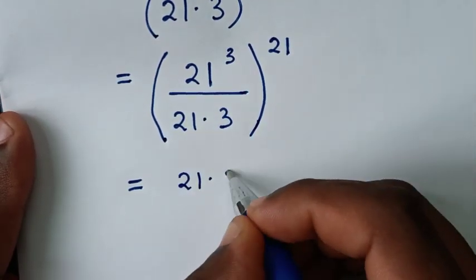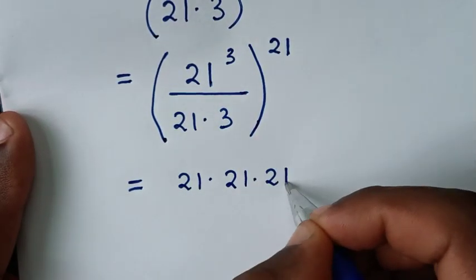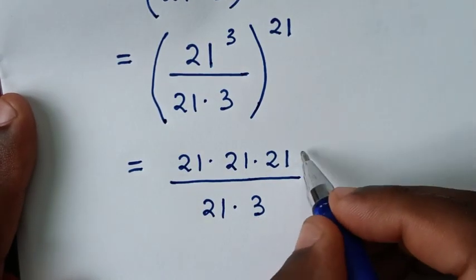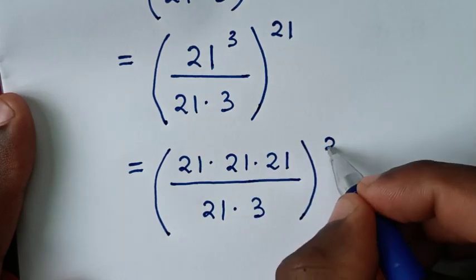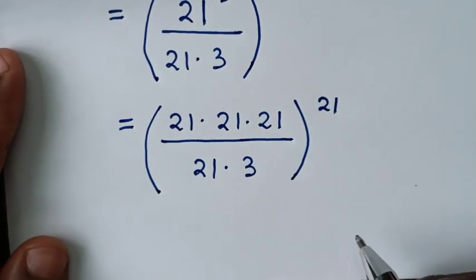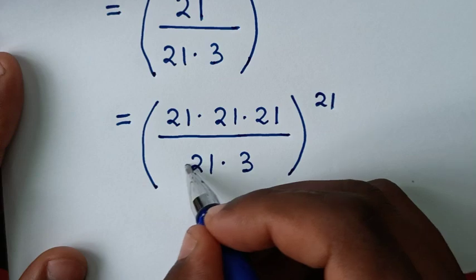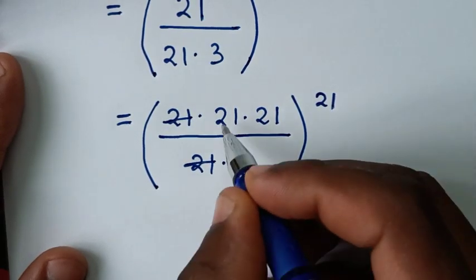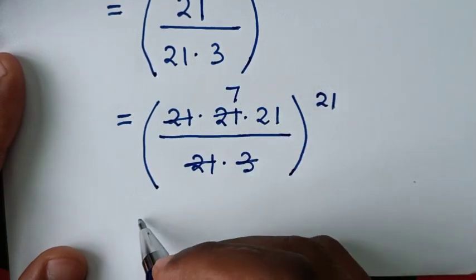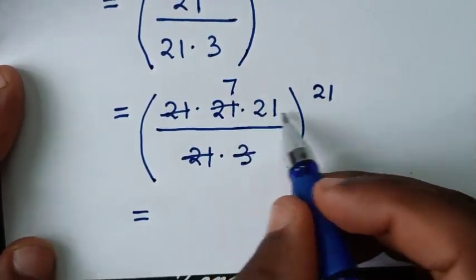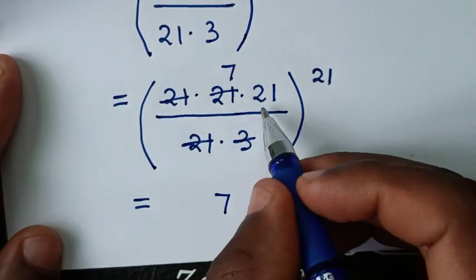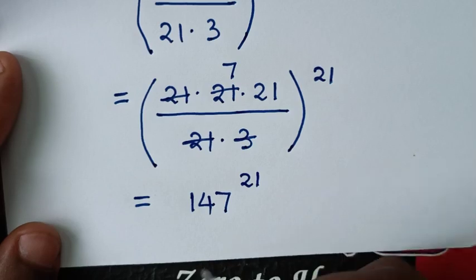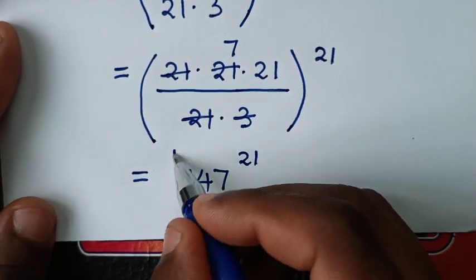Now, 21 power of 3 is the same as 21 times 21 times 21, over 21 times 3, with the bracket raised to the power of 21 outside. To simplify, the 21 in the numerator and denominator cancel, and 21 divided by 3 is 7. So we get 7 times 21 times 21, raised to the power of 21. This is the final answer.